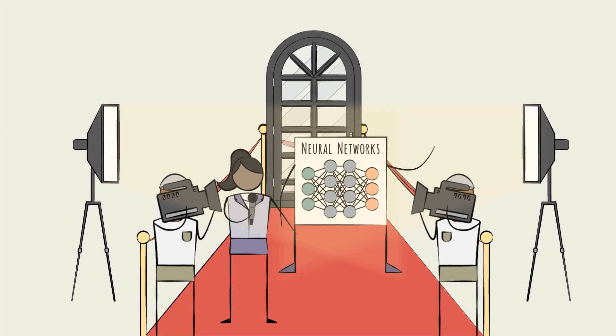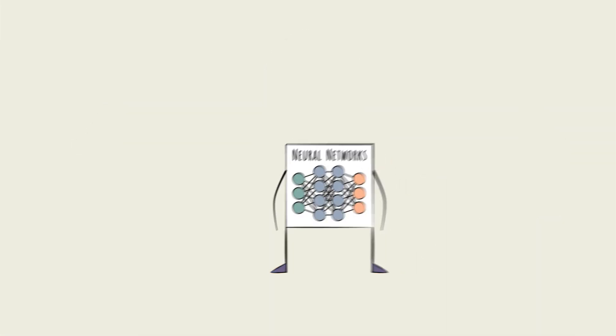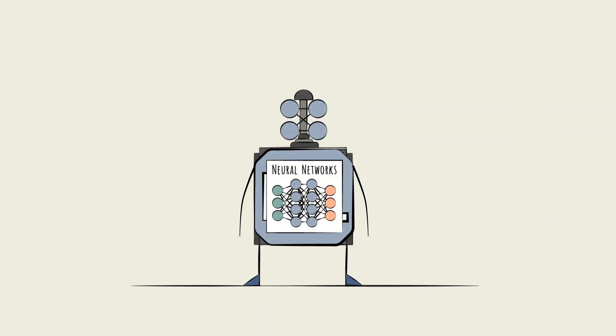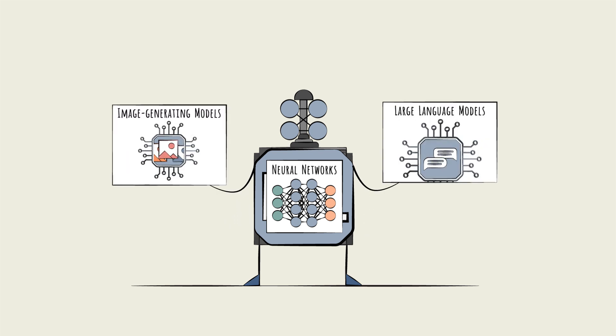Neural networks are one of the hottest topics in AI. These are the mathematical forms used in the most advanced AI models, including image-generating models and large language models.